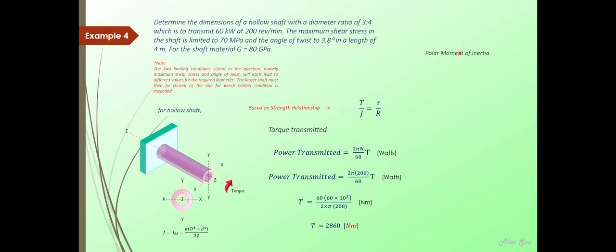Now polar moment of inertia for a hollow shaft. This is the equation or the formula we use for the moment of inertia for a hollow shaft. And also we know that based on this equation, J is equal to T times R divided by tau, where you bring J over to the right-hand side as the subject.